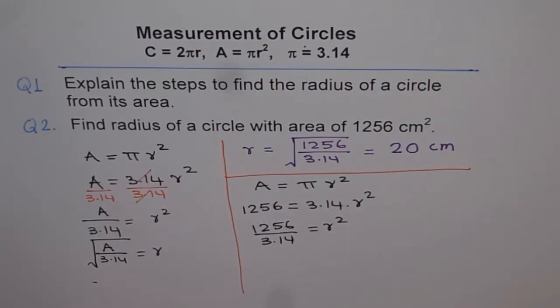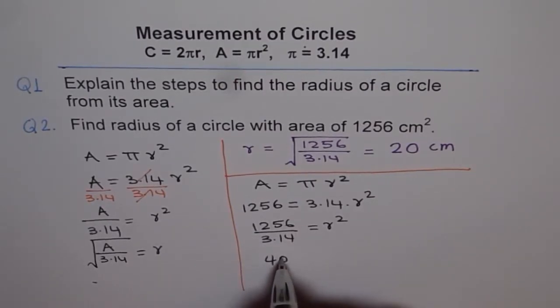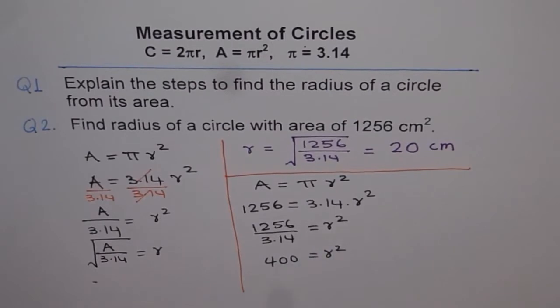So what is 1256 divided by 3.14 gives us 400. So that is 400 = r².